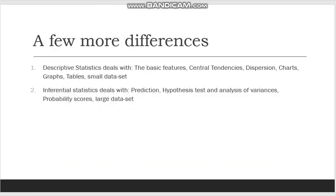Let me highlight a few more differences. Descriptive statistics is about describing the basic features of the dataset, such as the mean, median and mode of the sample, which are also known as the central tendency. Your data is being depicted as bar graphs or pie charts and the properties of that graph, such as skewness, are being studied.